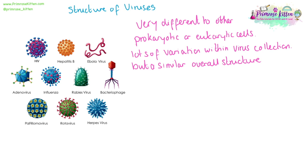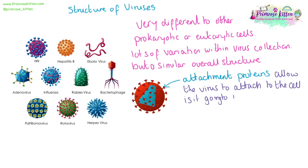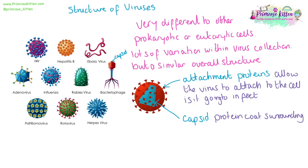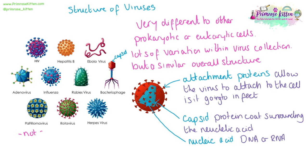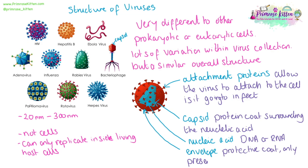But within this variation, all viruses have a similar overall structure. On the outside they will have attachment proteins, which allow the virus to attach to the cell it's going to inject itself into. They will have a capsid — a protein coat surrounding the nucleic acid, which can be DNA or RNA. It is important to remember that viruses are not cells and they are not living. They are incredibly small — 20 nanometers up to about 300 nanometers — and can only replicate inside a living host cell. They may also have an envelope, a protective coat present in only some viruses.